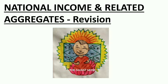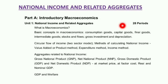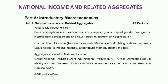Once you are done with all the lectures, I'll prefer you to go through this entire video. So first of all, here is your syllabus of all topics that were in this chapter. We are done with each and everything — first we did macroeconomics, then we discussed basic concepts like consumption goods, capital goods, final goods, intermediate goods, stock and flow, gross investment, and depreciation. After that we did circular flow of income, aggregates related to national income, methods of calculating national income, real and nominal GDP, and GDP and welfare.